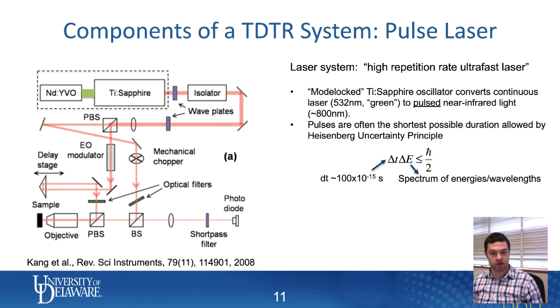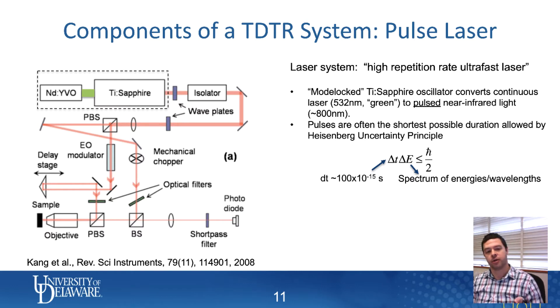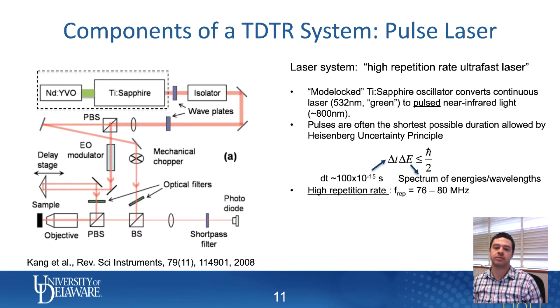On a spectrometer, that shows up as a spread in the wavelengths coming out of your titanium sapphire laser. In the following slide, I'll show you an example of some spectra that I've measured coming out of some different titanium sapphire lasers.